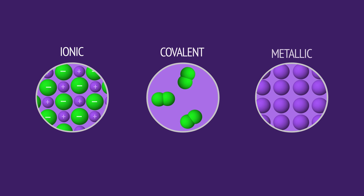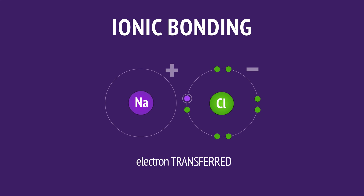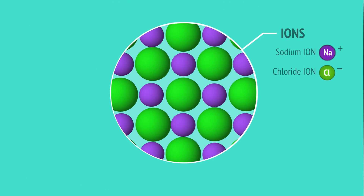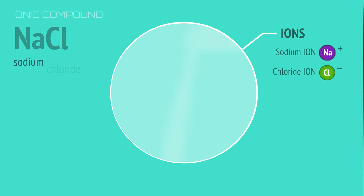Different types of bonding produce different types of substances. Ionic bonding produces a solid lattice of ions, like these sodium and chloride ions that make up sodium chloride.